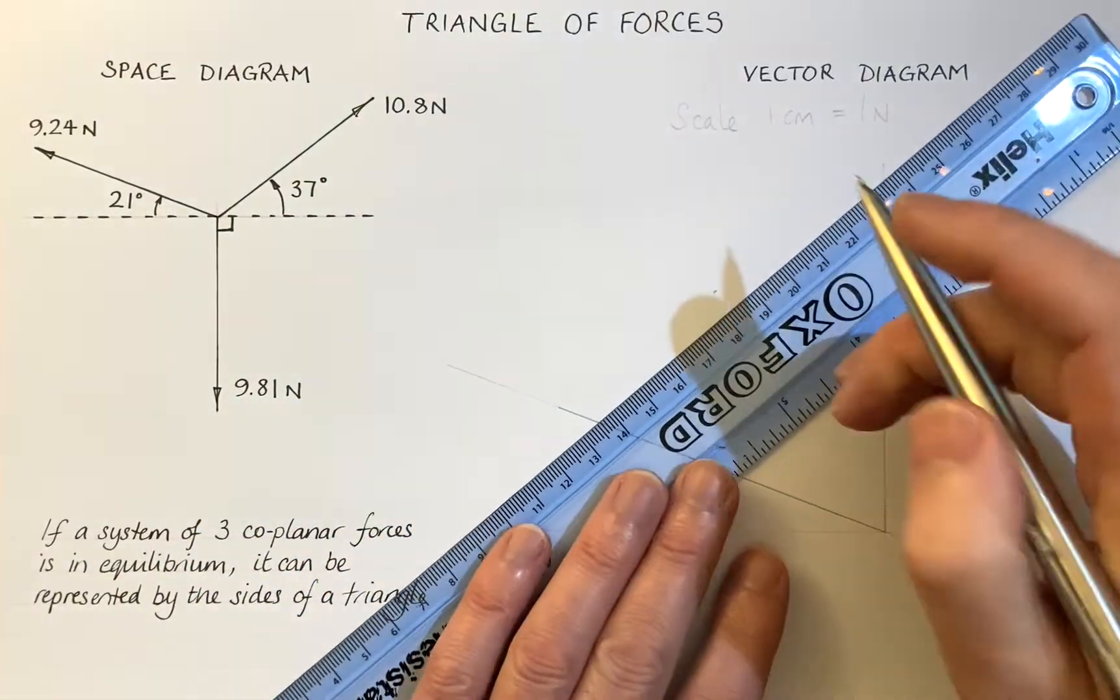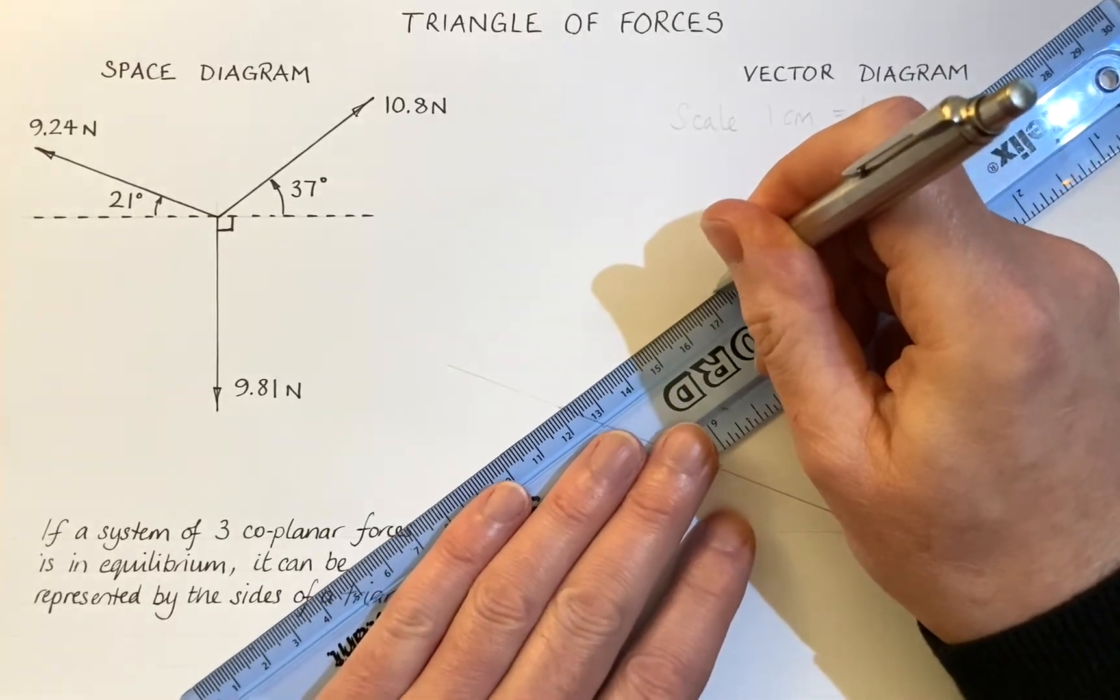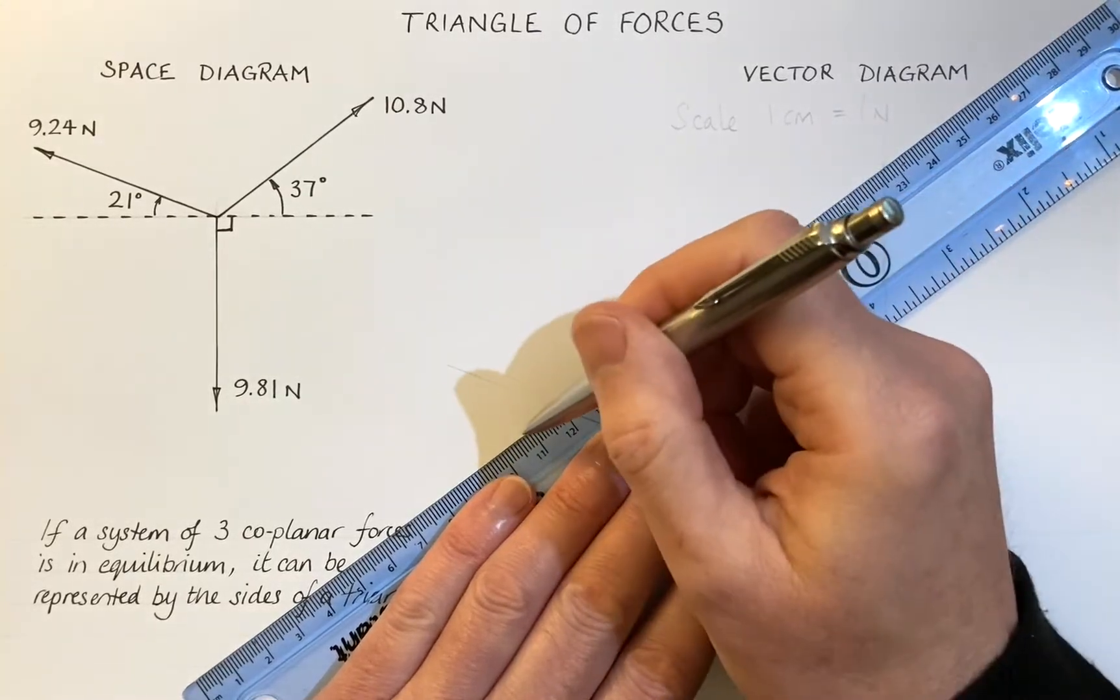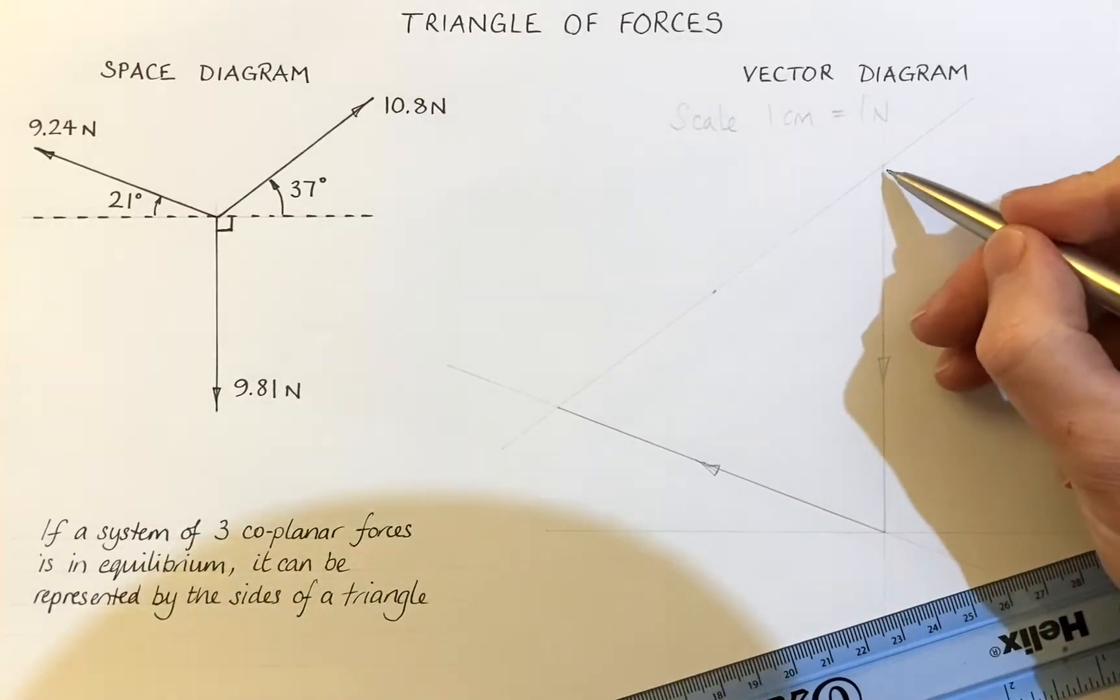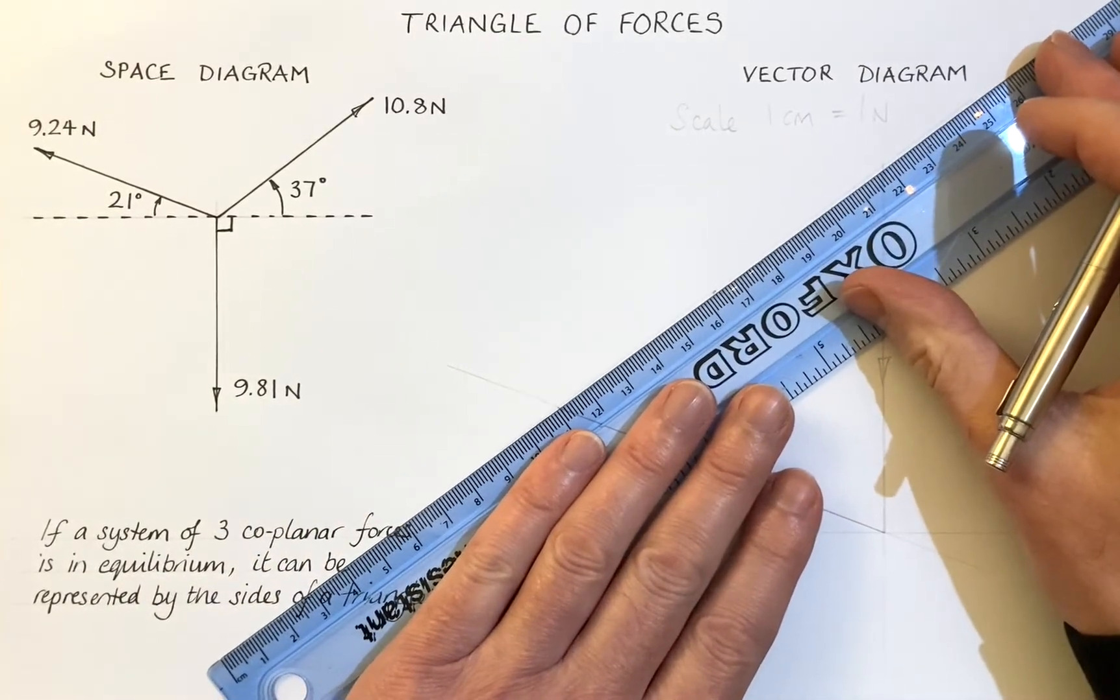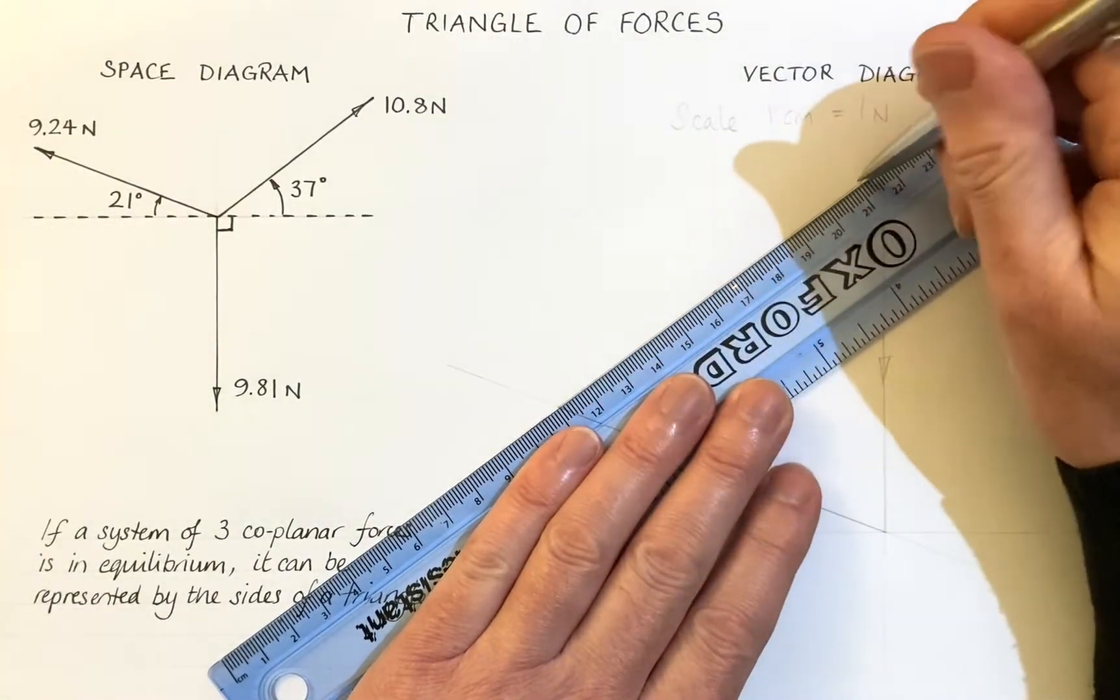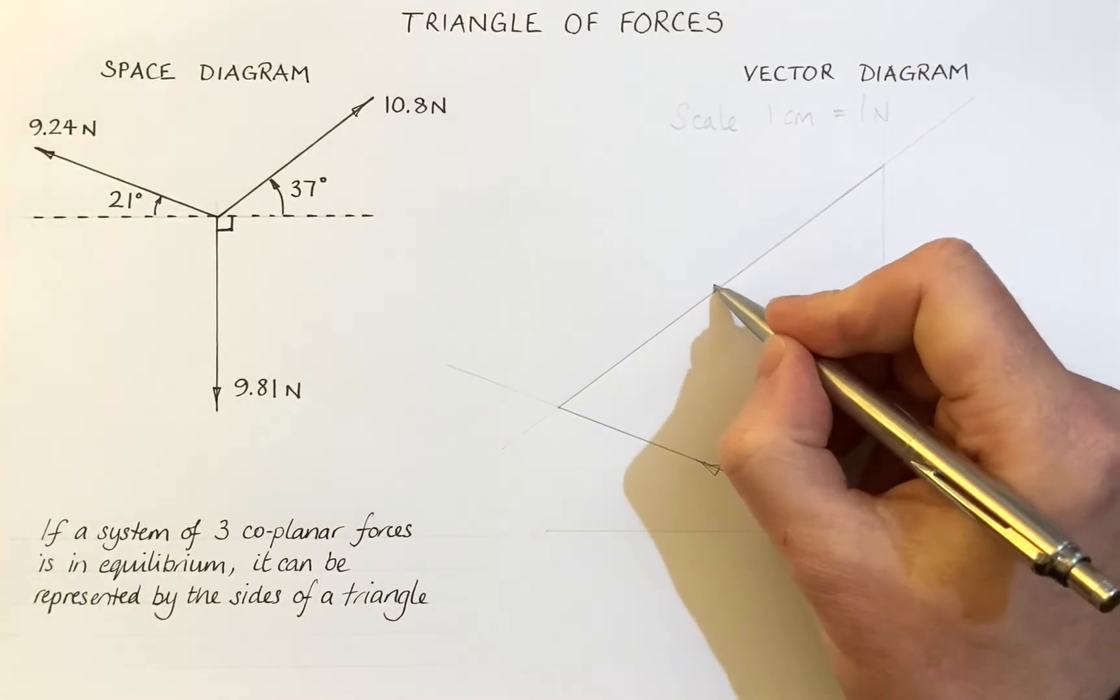Now, I'm hoping that if I join this dot here with the end of that vector there, I'm hoping it's going to join up with the top of the triangle there. Draw a faint line to start with. Yeah, that's pretty good there. Now, it doesn't always join up. And there's a couple of reasons for that. Just draw that in a bit darker. There we go. Put my arrow on.